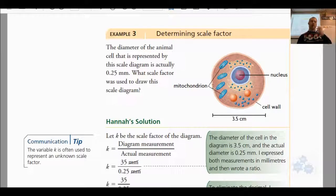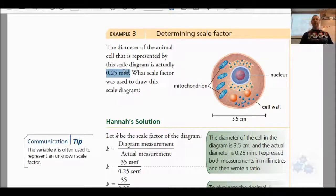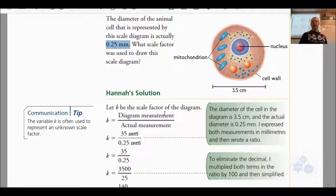Okay, so here's a picture of the cell. And determining scale factor, well, it's pretty straightforward here. If we have the actual, so the diameter of the animal cell is represented by the scale diagram. It's actually 0.25 millimeters. What's the scale factor used for this diagram? Well, if the width is 3.5 centimeters, then the scale factor, again, would be diagram divided by actual measurement. So diagram, and again, getting the units the same, pretty important.